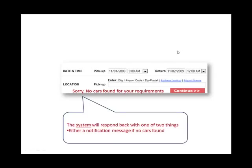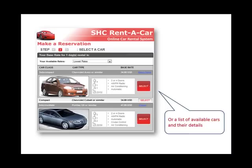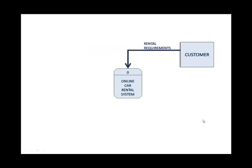Something will take place in the system and then the system will respond back with one of two things. Number one, the system will say sorry, no cars found, so the customer will get a notification that according to his or her requirements there is no car available. But also if the car is available, another output the system provides to the customer is a list of available cars. In the context diagram, these are arrows from the system to the customer — a notification saying no cars found, or an available car list.